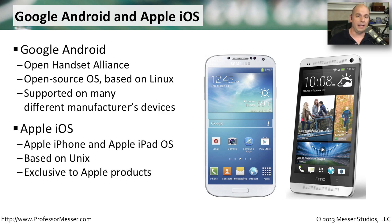You'll see a very different philosophy with Apple's iOS. iOS is an Apple-only operating system — it is not open source. It is completely proprietary to Apple. You'll see this iOS software running on iPhone and iPad devices, and it's based on the Unix operating system. You'll only see Apple iOS on Apple devices; iOS is not licensed to any other company. If you're running Apple iOS, you're also using it on Apple hardware.